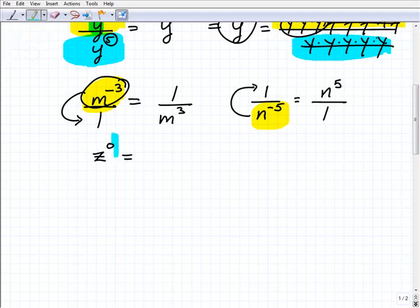Let's take a look at our last example. Z to the zero power. You ready for this? Drum roll. One. Anything to the zero power is one.